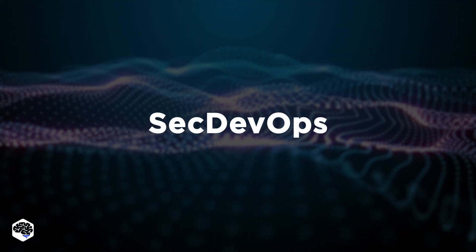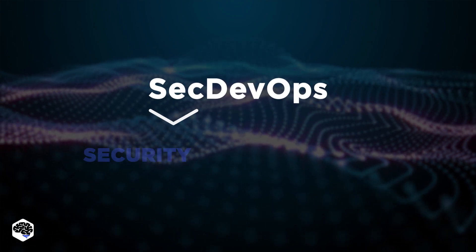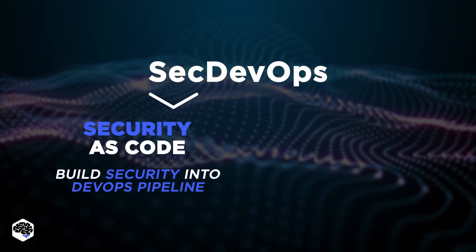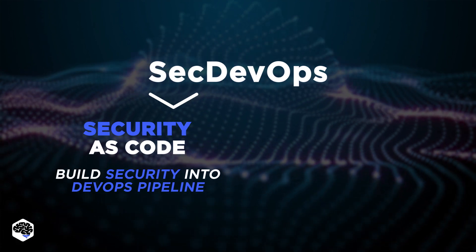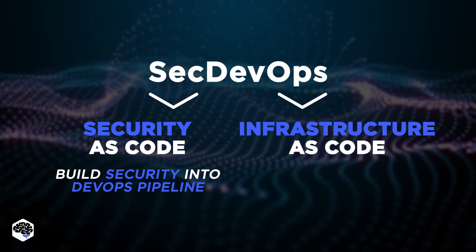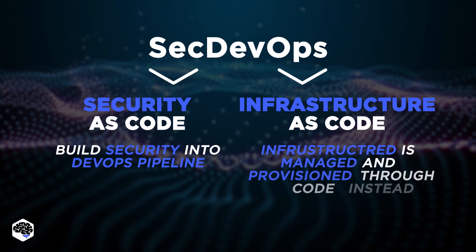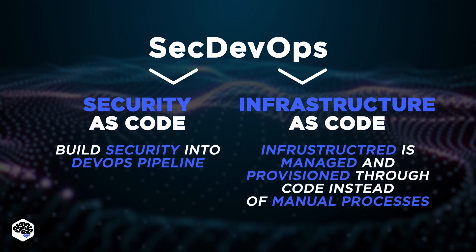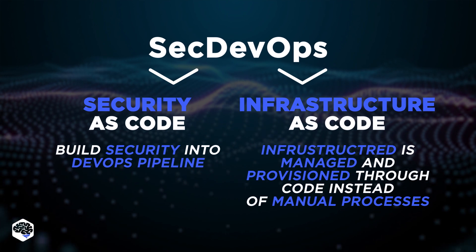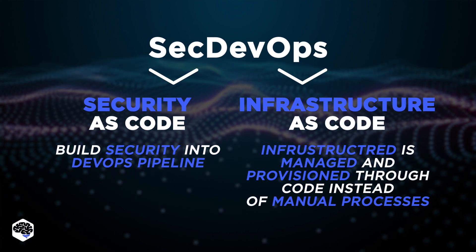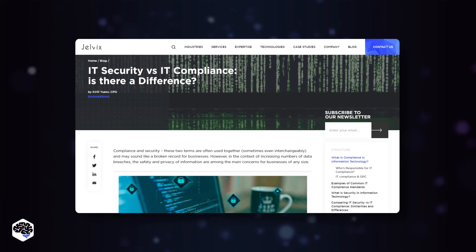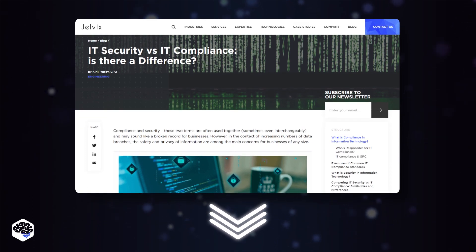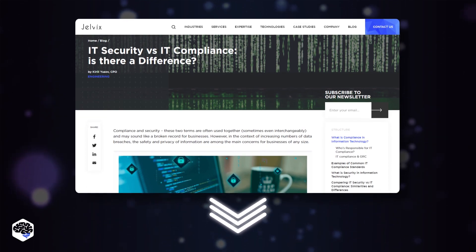SecDevOps comprises two distinct parts: security as code, that involves building security into the tools in the DevOps pipeline, and infrastructure as code, that defines a set of DevOps tools to configure and update infrastructure components to provide a secure and controlled deployment environment. We highly recommend you read an article that covers the differences between IT security and IT compliance. The link is in the description.